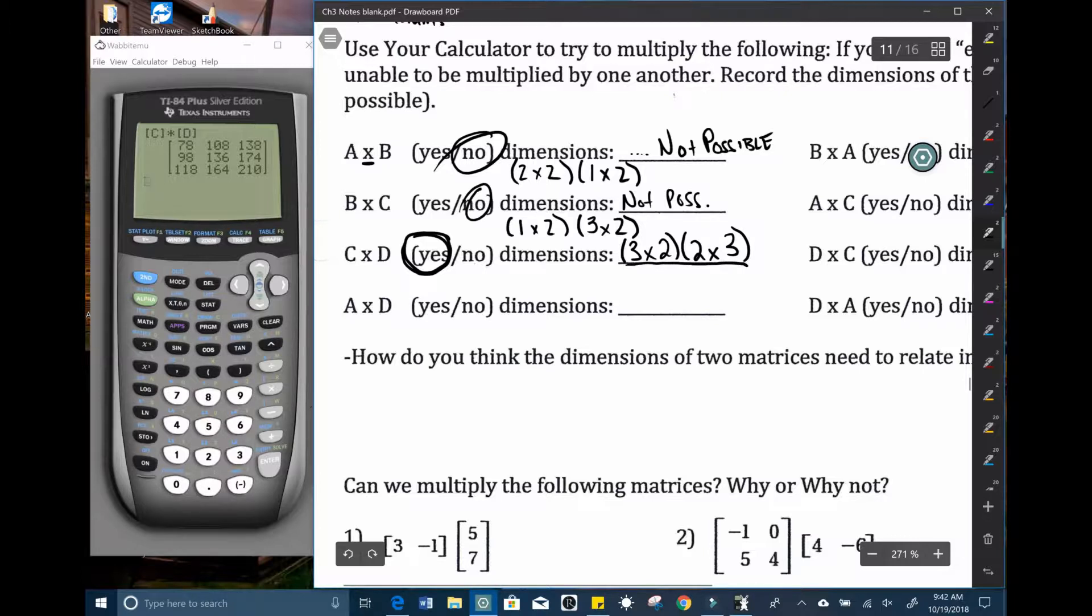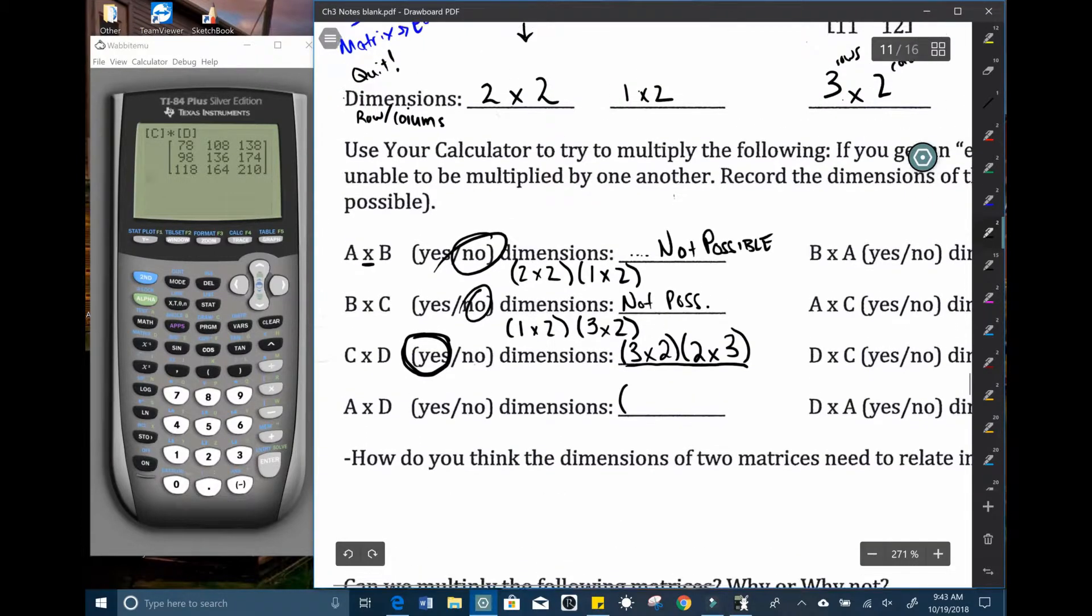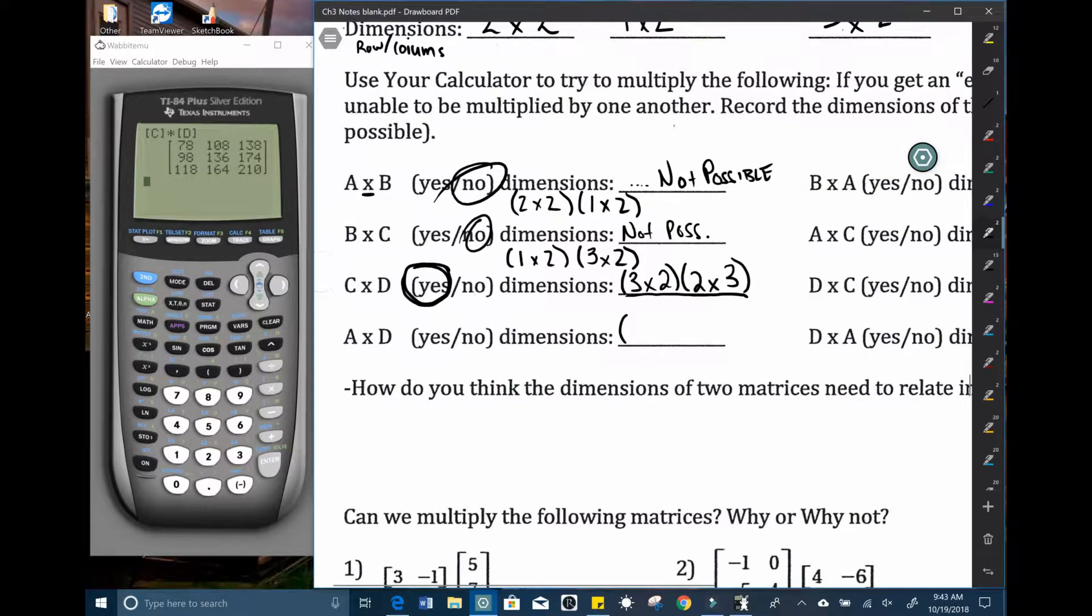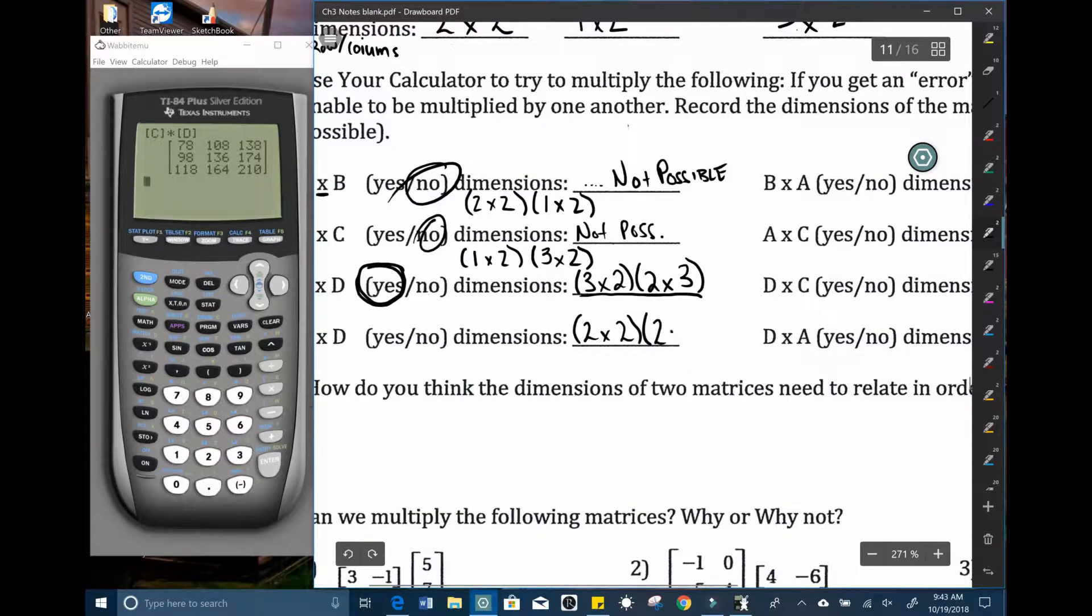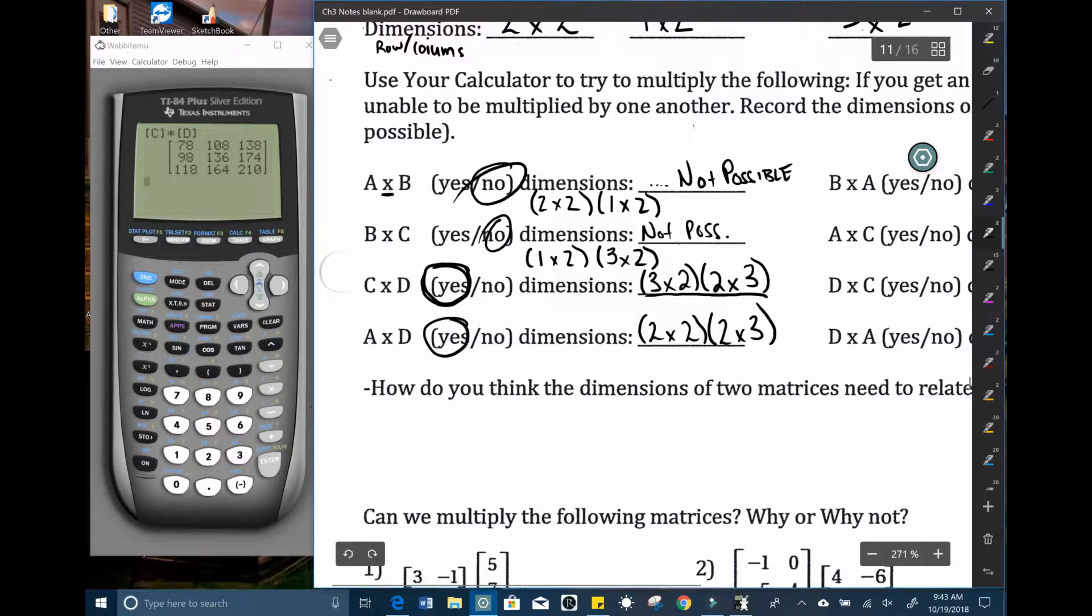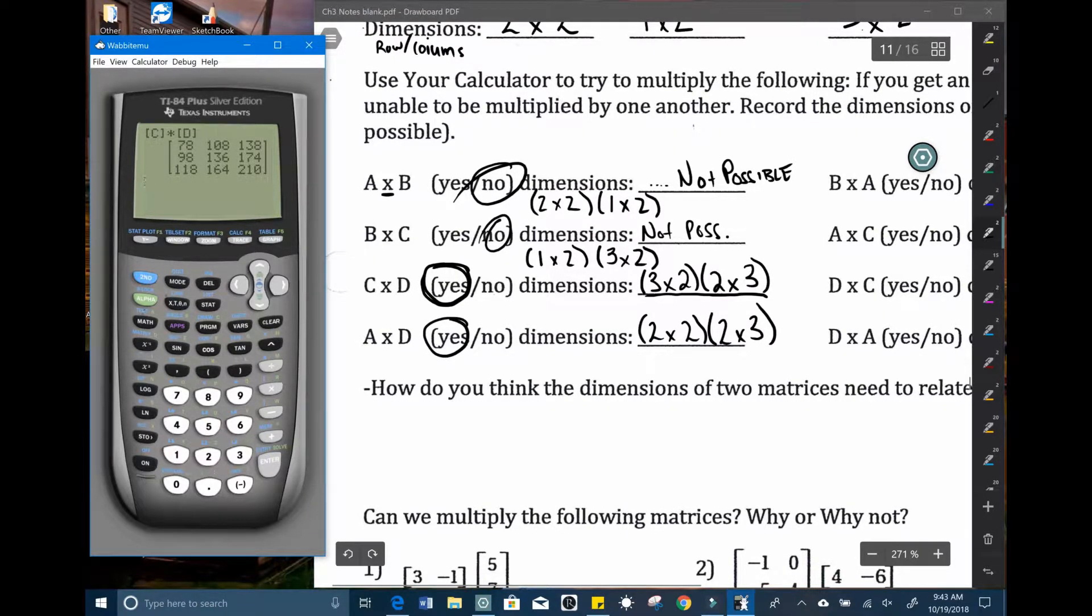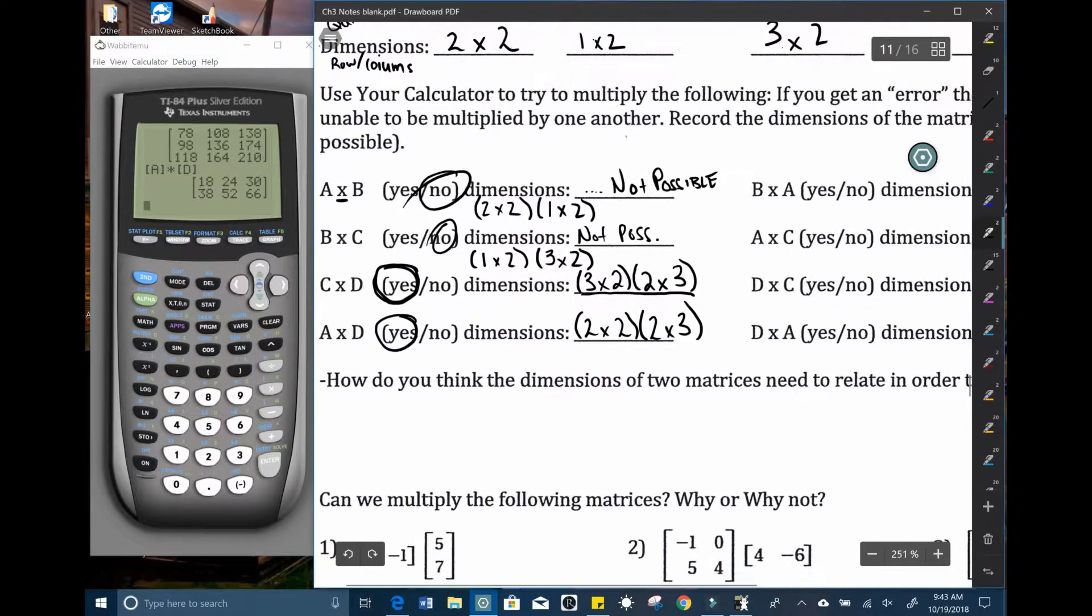A times D, just to write that out. A times D, we have the dimensions. A is a two by two and D is a two by three. I am going to guess that it works. Now let's see. Second quit. So second matrix A times second matrix D. Ah, what do you know? We are correct. Interesting.